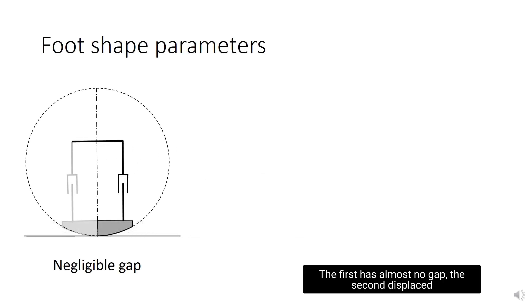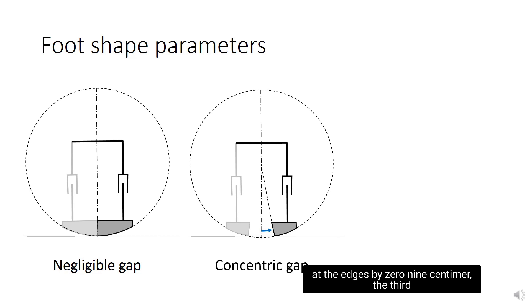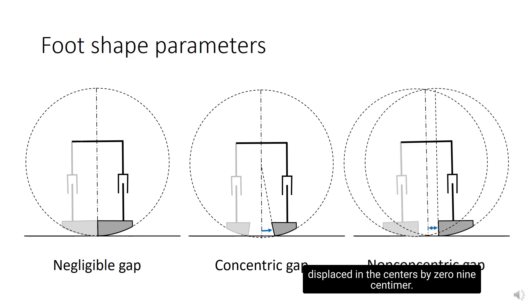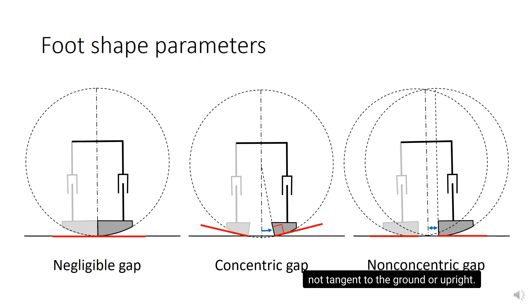The first has almost no gap. The second displaces the edges by 0.9 centimeters. The third displaces the centers by 0.9 centimeters. Note that the concentric gap feet are not tangent to the ground when upright.